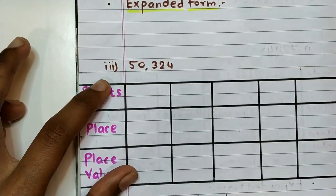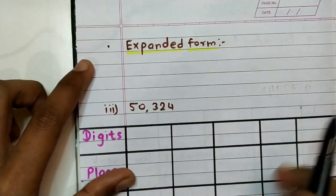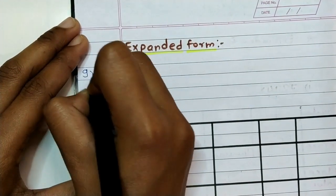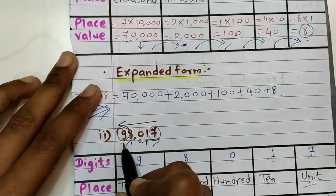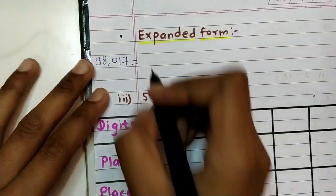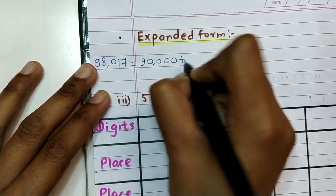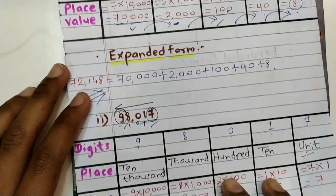Now we write the expanded form. In the expanded form we add all place values. Our first place value is ninety thousand, then eight thousand. The given number is 98,017 equals ninety thousand plus eight thousand.